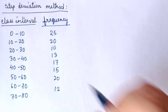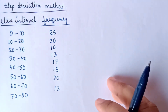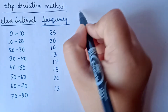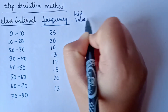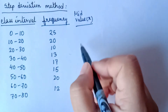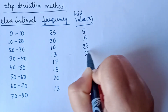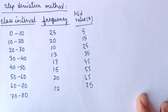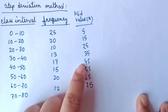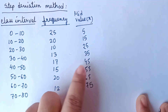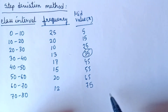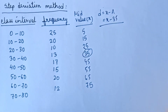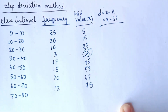The next question has a class interval and frequency given. Again, we will find the arithmetic mean by step deviation method. First, we find the mid value, denoted by X. The mid values are 5, 15, 25, 35, 45, 55, 65, and 75. We need to assume any one of these values as the assumed mean, so we assume A equals 35. That means D equals X minus A, which is X minus 35.